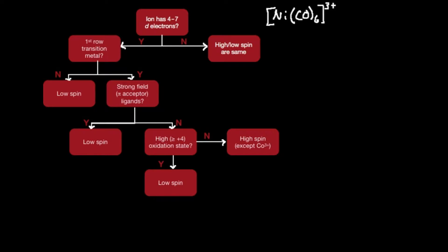This is hexacarbonyl nickel 3. Our first step is to calculate the oxidation state of the nickel. So I take the sum of all the charges in the complex, which is the overall charge 3+, and set that equal to the sum of each charge in here. Now let's look at carbon monoxide.